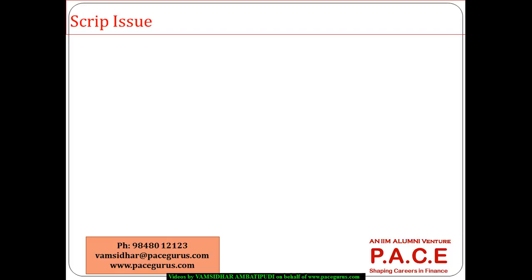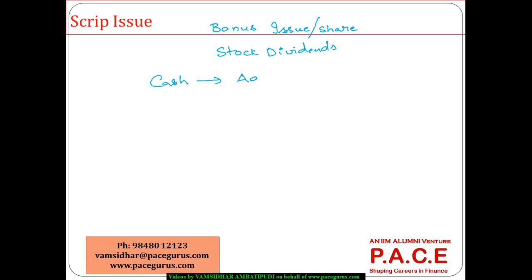Let us talk about the script issue. In some cases or in some countries, this is even called a bonus issue or bonus share, or in some countries, it is even called the stock dividend. Whatever is the name given to this, instead of paying dividend in the form of cash, the company is trying to give additional shares to the investors in lieu of the dividend. It could be in some proportion — for every three existing shares, one new share could be given, or for every one existing share, one new share could be given. Any kind of mechanism could be there as part of the script issue.